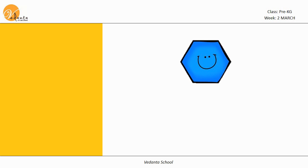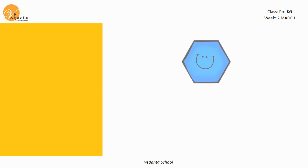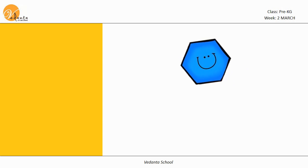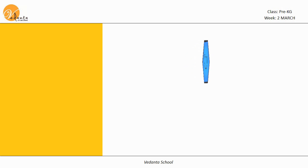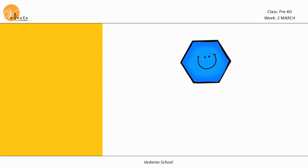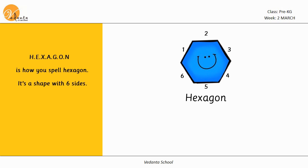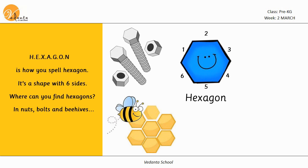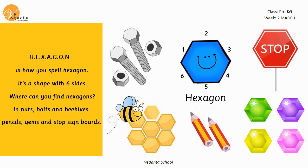H-E-X-A-G-O-N. H-E-X-A-G-O-N is how you spell hexagon. It's a shape with six sides. Where can you find hexagons? In nuts, bolts and beehives, pencils, gems and stop sign boards.